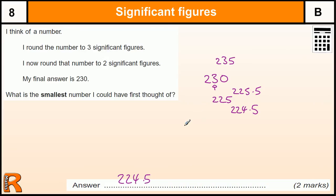They also accept the answer 224.49 recurring, with the nine recurring. If you only got 225 written down, you would get one mark for that on the exam paper. Or if somewhere between these two bounds you wrote something like 225.5 or 226.5 — anything less than 230 in that region — that would give you a method mark.